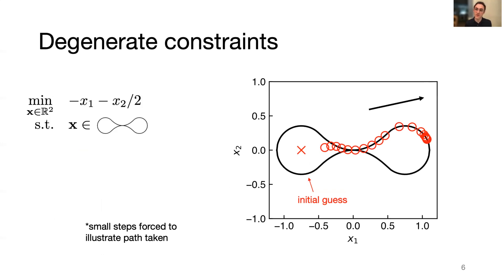LFP-SQP can also handle some pathological problems with degenerate constraints like this one here. For this kind of infinity symbol-shaped feasible region with a degenerate pinch in the middle, you can see all of the iterates remain feasible as they approach the optimum at the right.